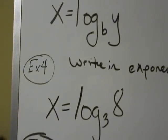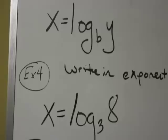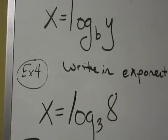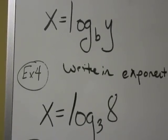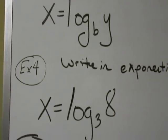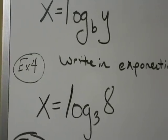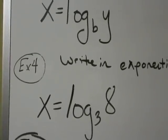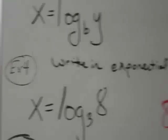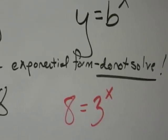X equals log base 3 of 8. Okay, X is the x, the 3 is the B, and the Y is the 8. So if I need to turn this into Y equals B to the X power, who's the Y? Good, and that equals, who's the B? Raised to the X? 8 equals 3 to the X power. Very good.